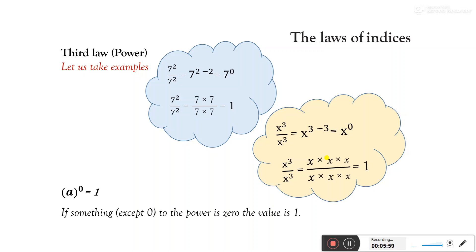Third law: the Zero Power Law. If something is raised to the power 0 — except when the base is 0 — the value is always 1. For example, 7 squared divided by 7 squared equals 7 to the power 2 minus 2, which equals 7 to the power 0. Simplifying directly, 7 squared over 7 squared is (7 × 7) over (7 × 7), and cancelling gives 1. So we have derived that 7 to the power 0 equals 1.